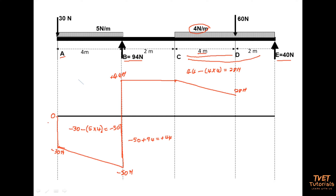Now I'm at point D. At point D there is a point load. A point load causes a negative shear force, so I go down with a vertical line. The magnitude of the point load is 60 newtons. I calculate: 28 minus 60 gives negative 32 newtons. I draw a vertical line from positive 28 down to negative 32, and label that corner negative 32 newtons.